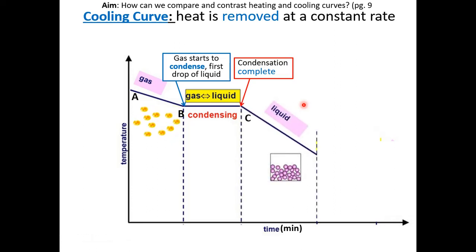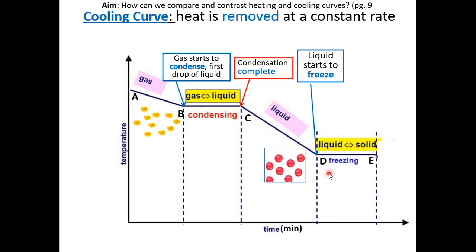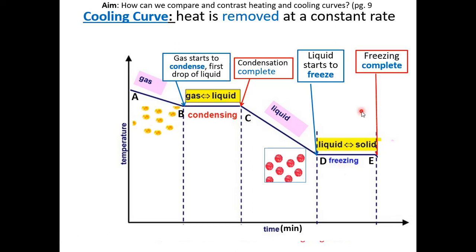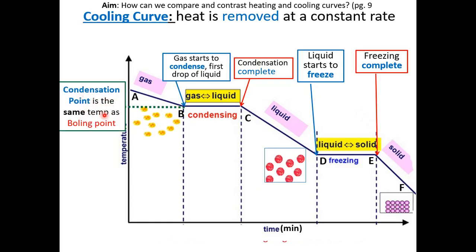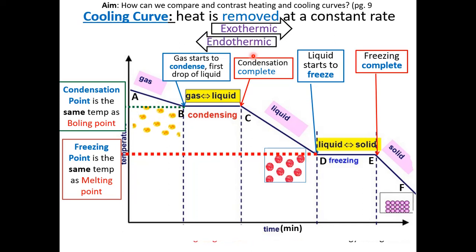The temperature will decrease as heat is being removed at a constant rate. Eventually, the liquid will begin to freeze. Freezing is a phase change — during freezing, two phases exist at the same time: liquid and solid. Just like condensation, the temperature is essentially constant even though heat is being removed, because intermolecular forces are forming. Once freezing is complete, the substance will be in a solid state and the temperature will continue to decrease. Condensation point is the same temperature as boiling point; freezing point is the same temperature as melting point. From point A to point F, it is exothermic because heat is being removed. So the opposite direction will be endothermic.